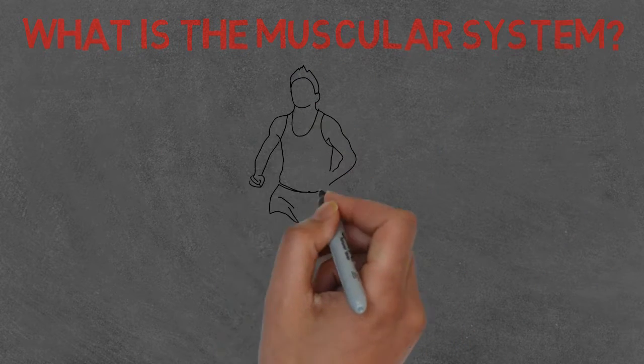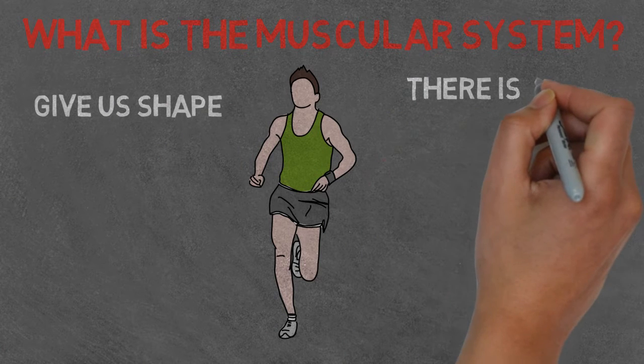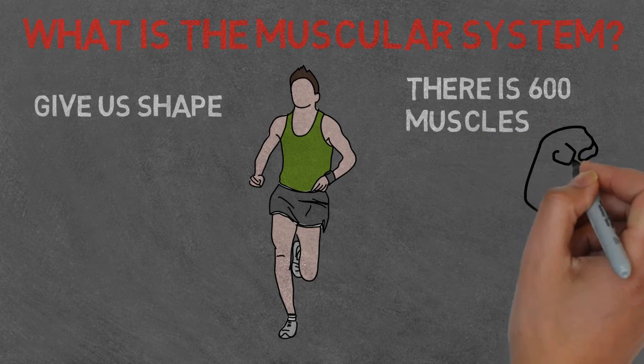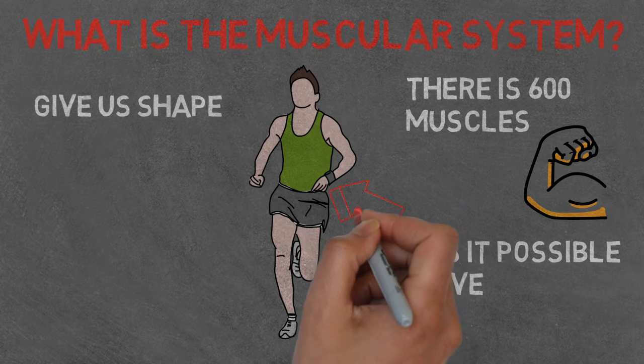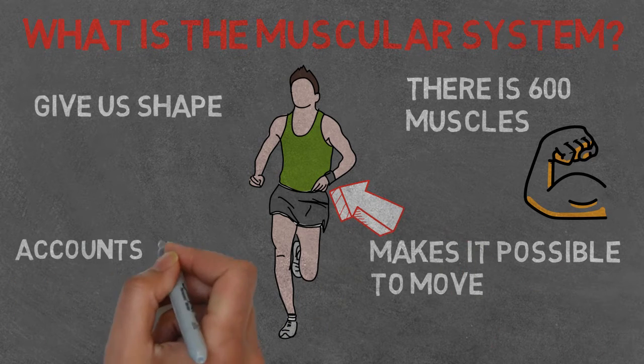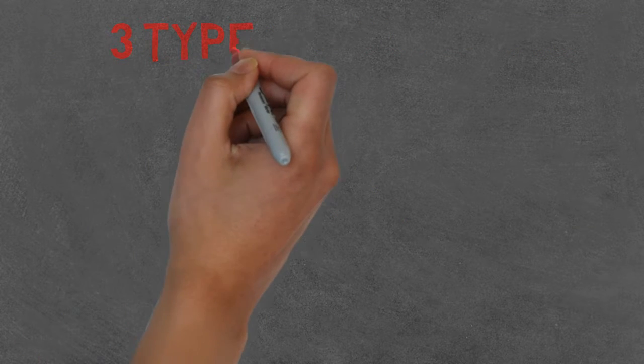It is made up of approximately 600 muscles, which help give us a shape. It makes it possible to move. And lastly, the muscles account for half our body weight. Now that we know what the system is, let's look at the three types of muscles that make this system up.